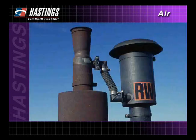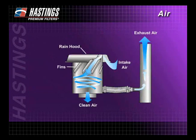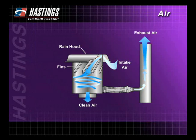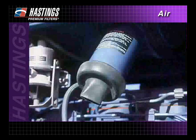The most common type of pre-cleaner uses stationary fins that swirl the air. This causes the heavier particles to separate out and collect in a trap where they are removed by a dust ejector valve or some other means.